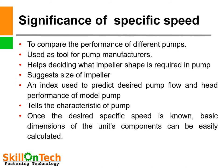What is the significance of specific speed? It is used to compare the performance of different pumps, and serves as a tool for pump manufacturers. It helps decide what impeller shape is required, suggests the size of the impeller, and is an index used to predict desired pump flow and head performance of a model pump. It tells the characteristics of the pump, and once the desired specific speed is known, the basic dimensions of the unit components can be easily calculated.